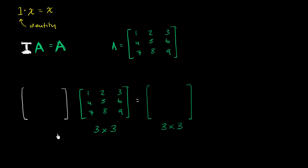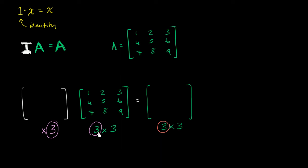There are a few things we know. First, in order for this matrix multiplication to even be defined, the identity matrix has to have the same number of columns as A has rows. A has three rows, so the identity matrix must have three columns. Also, the rows of the product are defined by the rows of the first matrix, and the columns of the product by the columns of the second. So I must be a 3 by 3 matrix.